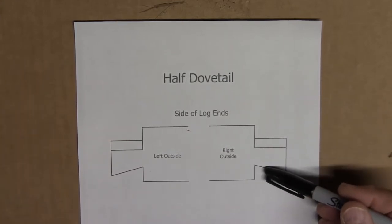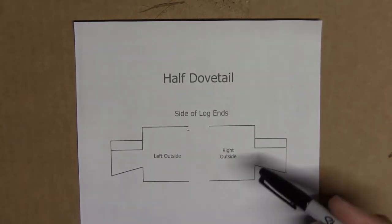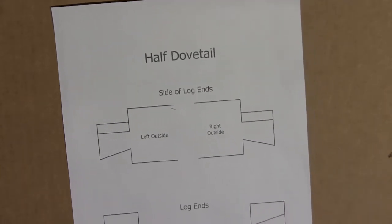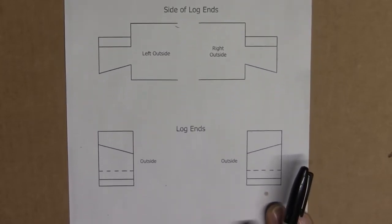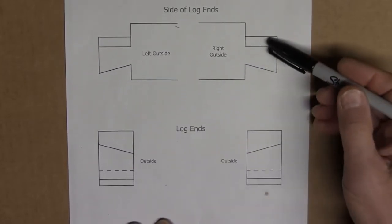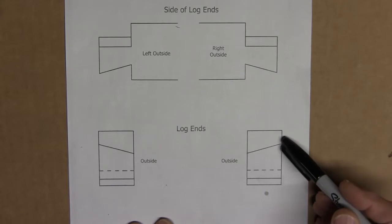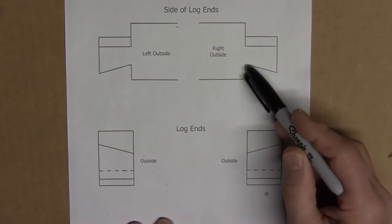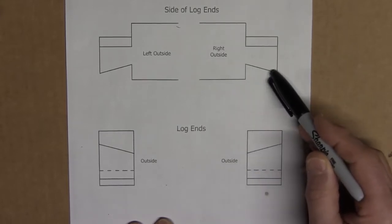The bottom of the half dovetail slants down. The top of the dovetail slants down and that slant is the same as that angle here.